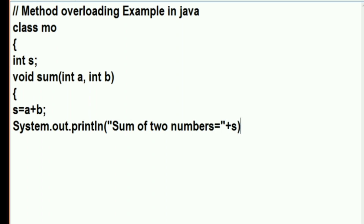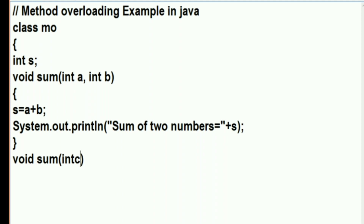So this method accepts two integer arguments. Whenever it is called, it needs two arguments, and it will calculate the sum and display it. Next, we are going to make another method with the same name.